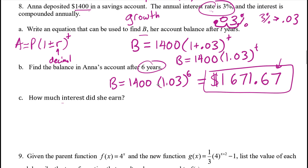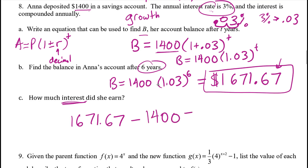To find how much interest she actually earned, subtract her initial balance from her final balance: $1,671.67 minus $1,400 equals $271.67. That's the actual interest earned — not bad for the account just sitting there.